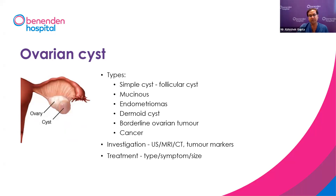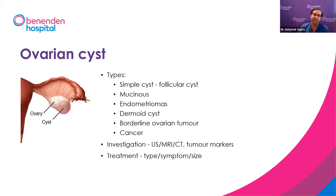The next common referral is for ovarian cysts. The ovary is connected to the uterus by the fallopian tube, which carries the egg. A small simple or follicle cyst is very common, especially in the reproductive age group. Anyone who produces an egg each cycle will form a small cyst. Up to five centimetres, a simple cyst is normal and we often don't need to treat it — most resolve on their own. All you need is a follow-up scan in four to six months to ensure the cyst isn't growing. If it does grow, we may need to treat it with surgery.